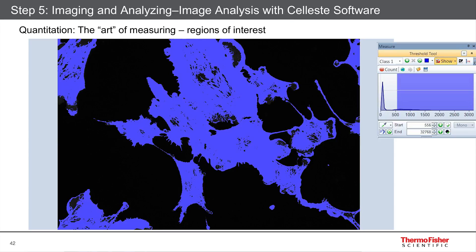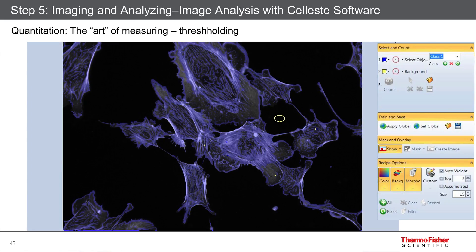One interesting feature about Celeste is that it has a smart thresholding method. You can actually teach the system what's specific and what's not. So in the pale blue here, you can see the actin is very nicely selected and none of the background — that's a neat feature of Celeste. I won't go into all the features of Celeste software here, but I urge you to learn more at our website. There's a lot of great functionality in that software package, including 3D reconstruction, various segmentation techniques, and counting — so if you want to count cells in an automated fashion.